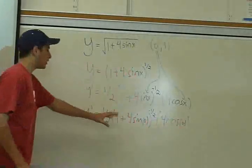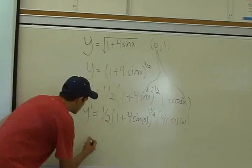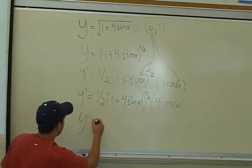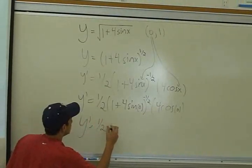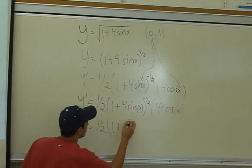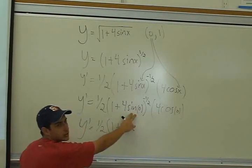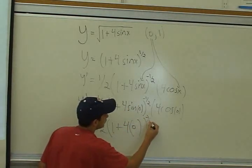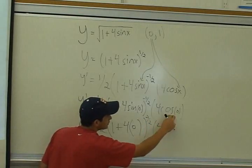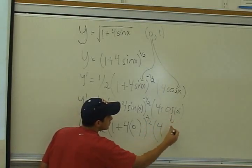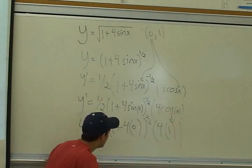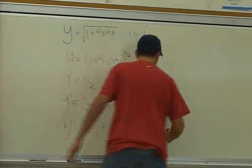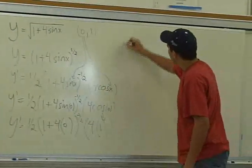So we just evaluate this and rewrite it. So this would be 1/2 times (1 + 4 times—and the sin of 0 equals 0, so it's just 4 times 0) to the negative 1/2. And this is 4, and the cos of 0 just equals 1. There you go. So you just rewrite this right here to make it easier for us to plug it in. There we go, so we take it up here.